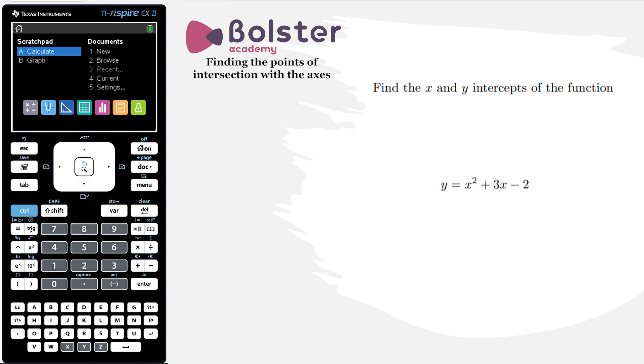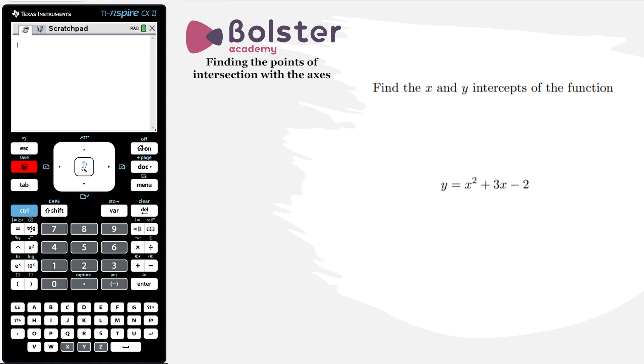There's a lot of ways to go about doing this question, but the easiest way to do it on our calculator is just to graph the function. So I hit scratchpad, graphical display, and I just type in the equation of my function. So we've got x squared plus 3x minus 2. Hit enter.